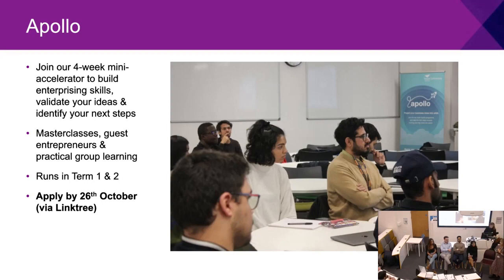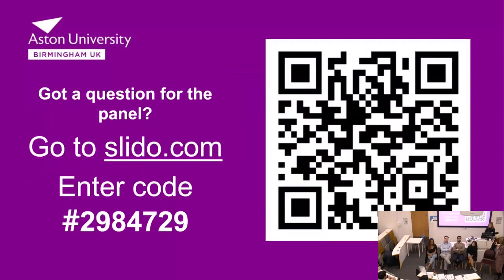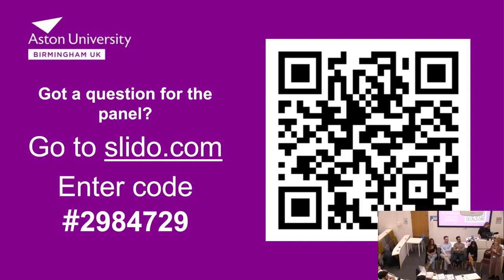If you go onto the link tree and click on Apollo, it'll take you to a very short application form. We're not looking for people with fully formed business ideas, just people who are interested in finding out more. The other thing to highlight is Slido. If you scan the QR code on the screen or the paper in front of you, you can write questions. You can also put your hand up and ask in the traditional way. Sometimes people don't feel comfortable asking out loud — Kath will be going through some of the questions at the end.